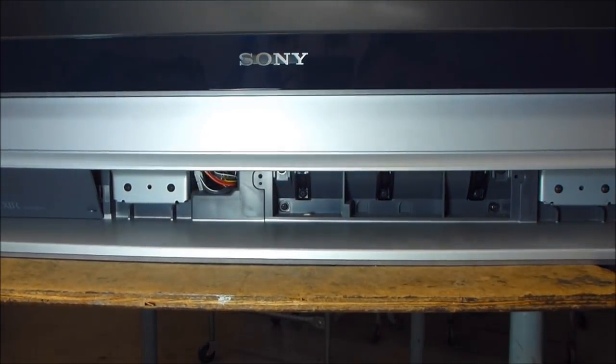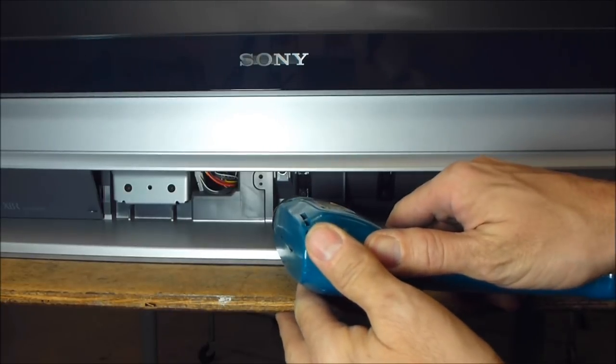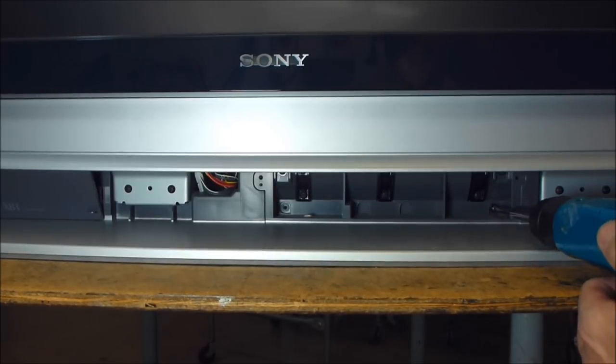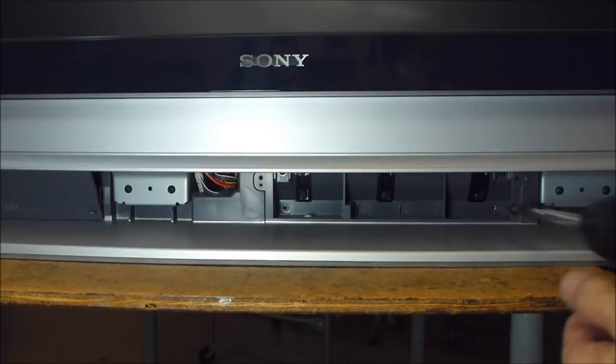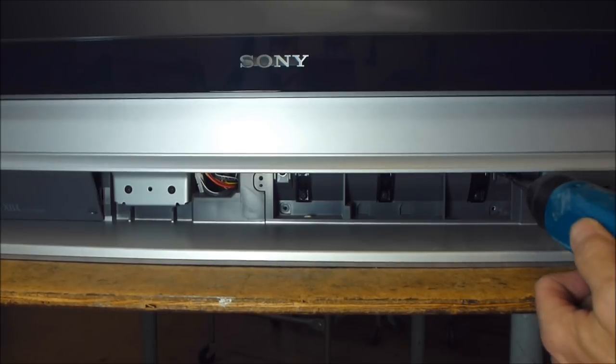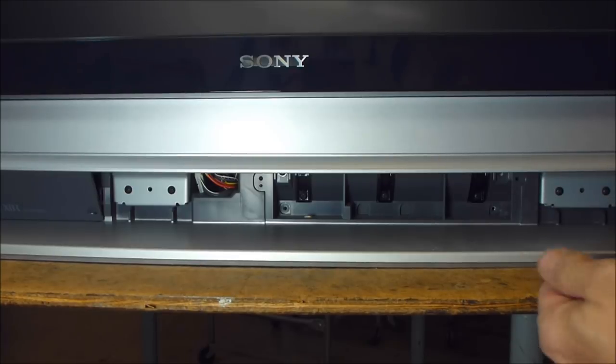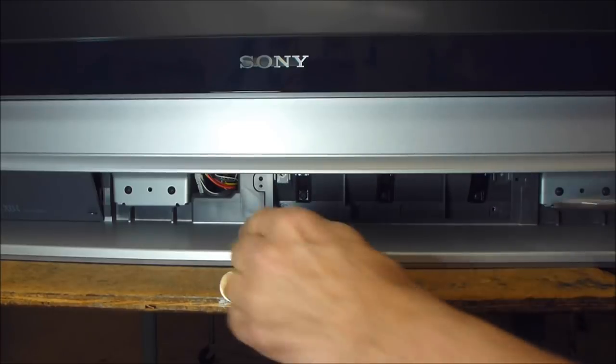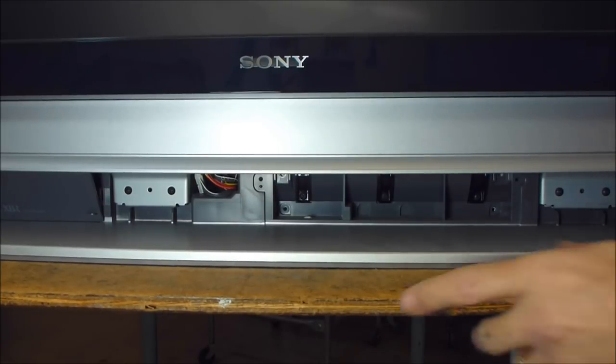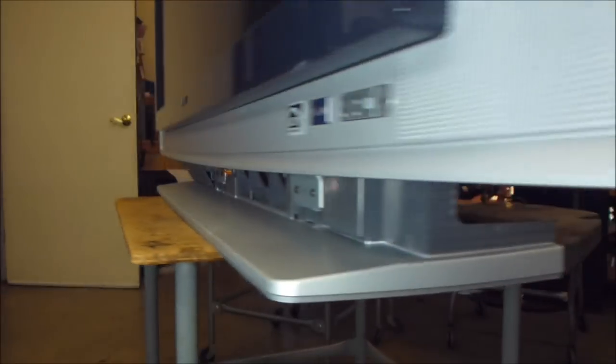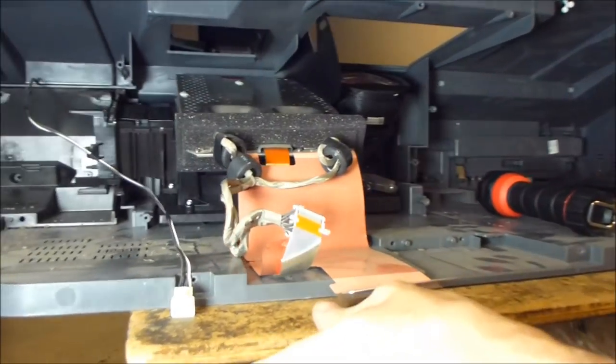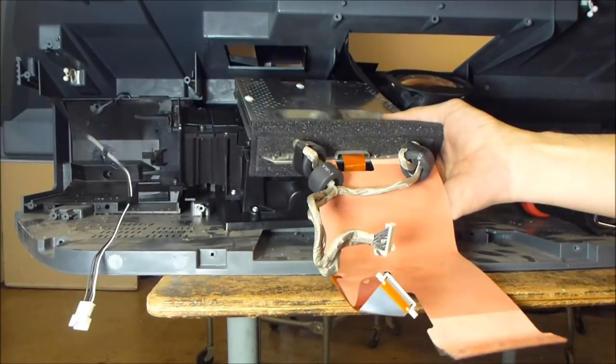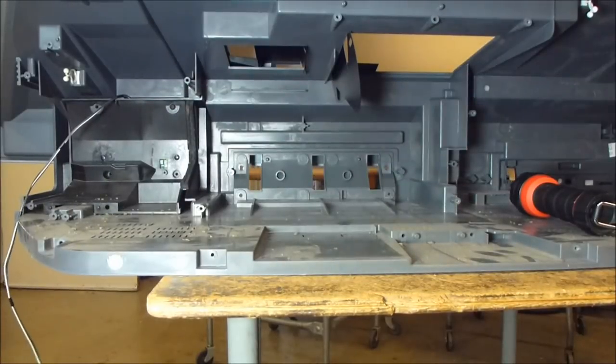Next you want to look for the four screws. Once you've got those four screws out of the front of the TV, you can turn it back around. Optical block can be pulled straight out of the TV.